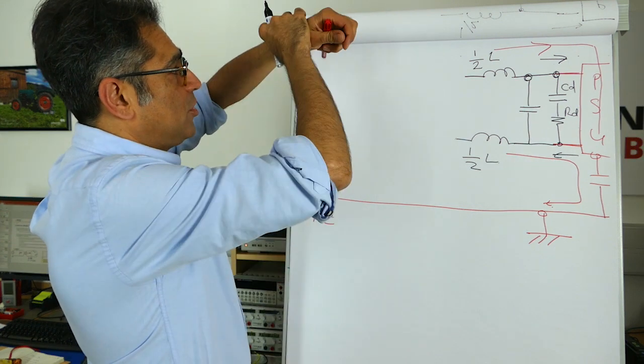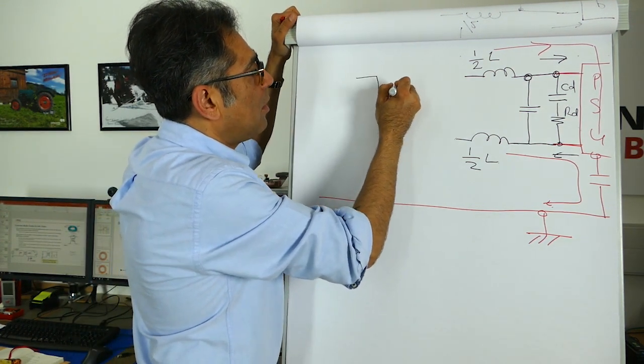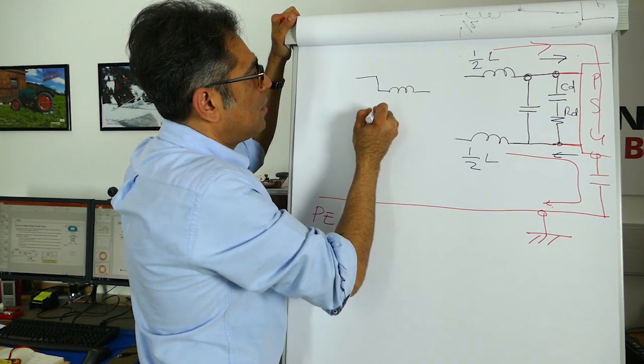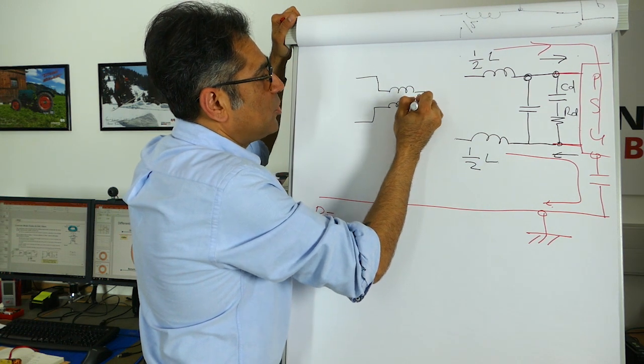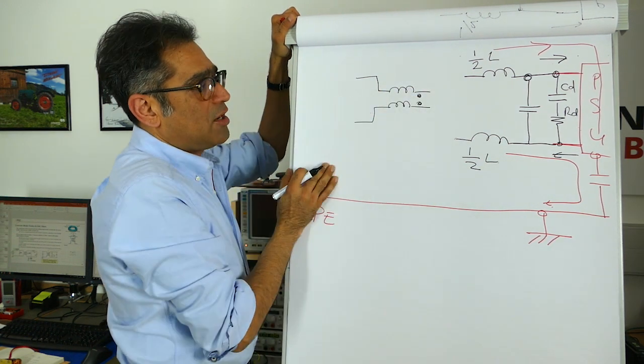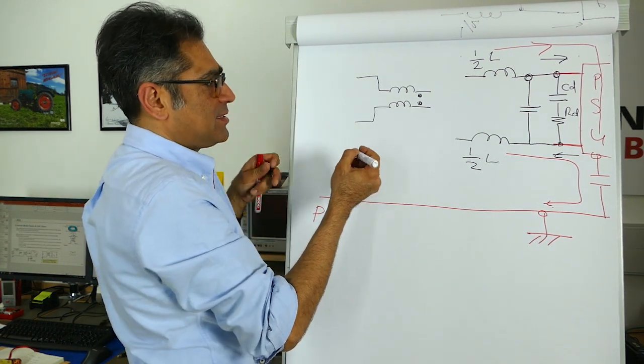It's usually drawn like so. The dot notation shows that it's a common mode choke and the C has to be with respect to the chassis.